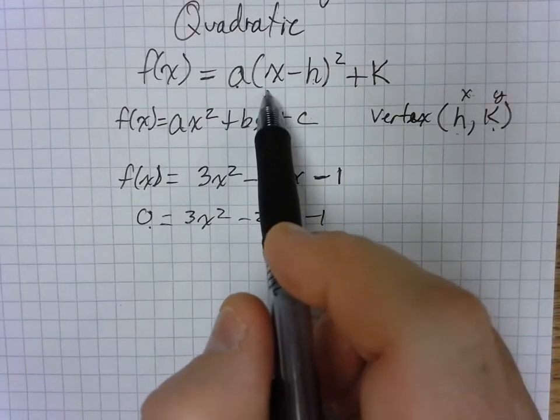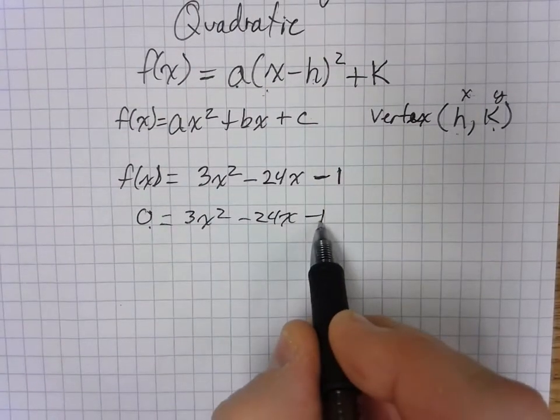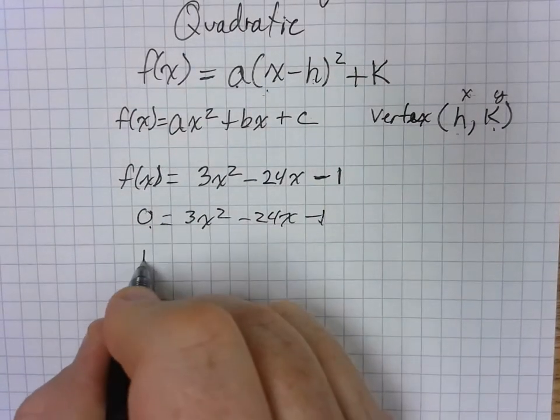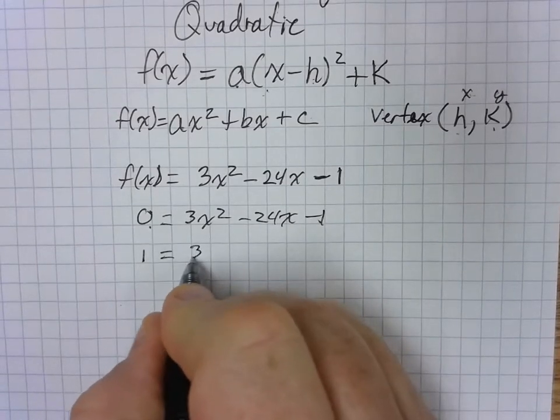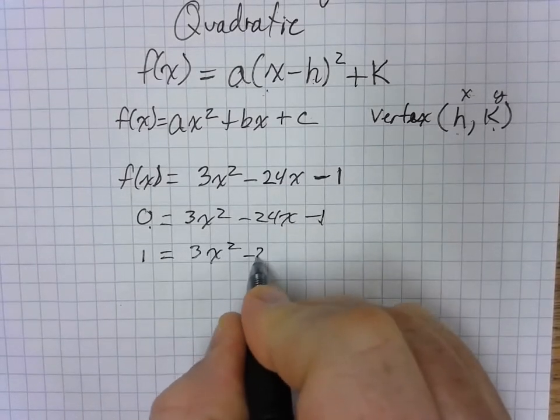And we're going to rewrite it into this form by completing the square. So we're going to take this 1 and move it over. So that's going to give us 1 equals 3x squared minus 24x.